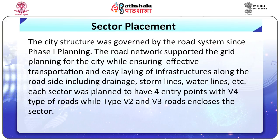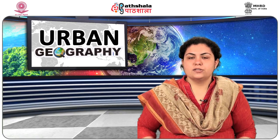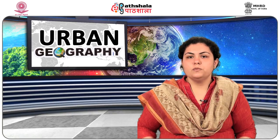The city's structure was governed by the road system since phase 1 planning. The road network supported the grid planning for the city while ensuring effective transportation and easy laying of infrastructure along the roadside, including drainage, storm lines, and water lines. Each sector was planned to have four entry points with V4 type roads, while V2 and V3 roads enclose the sector. These sectors were laid in the direction of the side slope, oriented towards northwest and southeast to ensure proper ventilation and natural cleaning of streets through air movement.